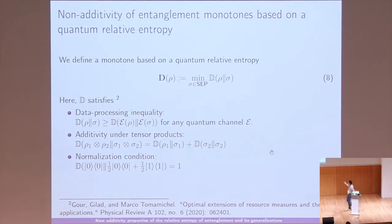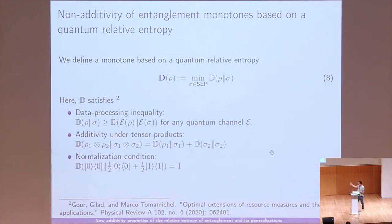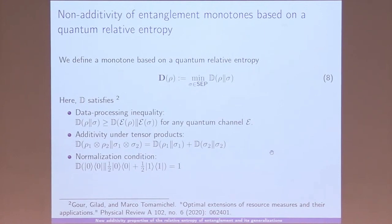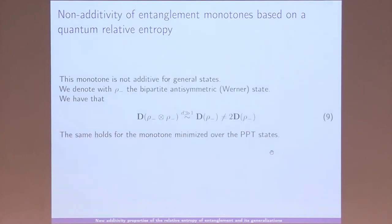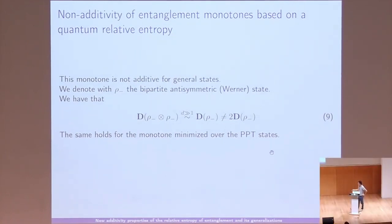We can define, in a similar flavor, a relative entropy-based measure D(ρ) by minimizing over separable σ a quantity D(ρ ‖ σ), where D is not necessarily the Umegaki relative entropy but can be any quantum relative entropy — a very general quantity satisfying three properties. The first property is the data processing inequality: it contracts under quantum channels acting on both arguments. This is why we like this construction: it inherits monotonicity under LOCC. The second is additivity under tensor product, and the third is normalization.